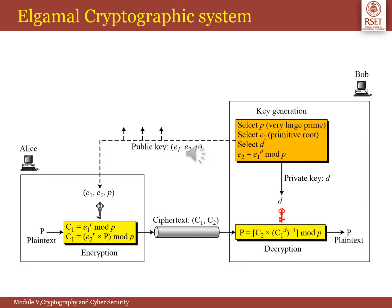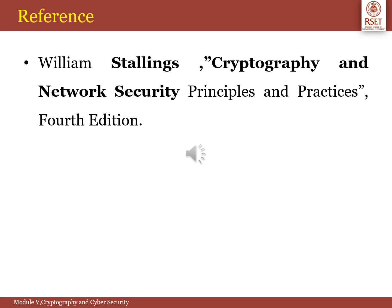Here is a diagrammatic representation of the ElGamal cryptographic system, showing how encryption and decryption takes place. In this session we have dealt with Module 5 of Cryptography and Cyber Security, covering the ElGamal cryptographic system and the Diffie-Hellman cryptographic system — their uses, how key generation is possible, and how encryption and decryption are done.